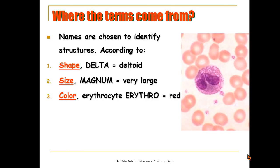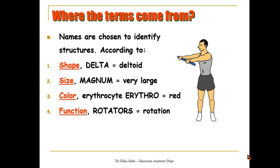Or we can name structure according to their color, like the erythrocytes or the red blood cells. Or we can name structures according to their function, like the rotators muscles, which rotate the spine.